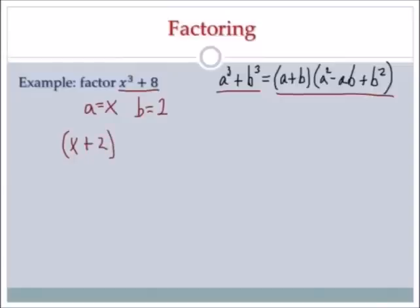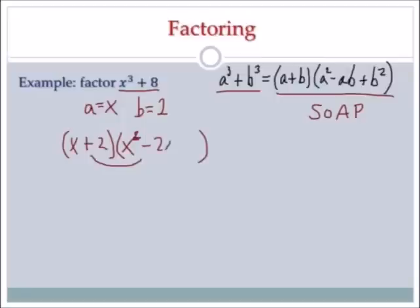So x plus 2 — that's a plus because it's the same as what I started with. Remember SOAP: Same, Opposite, Always Plus. I've got the same here, so I open the next set of parentheses. The next term is a squared, which is x squared. Then the next sign is a minus because it's opposite of the first sign. a times b is x times 2, which I write as 2x. The last sign is always a plus, and b squared — 2 squared — is 4.